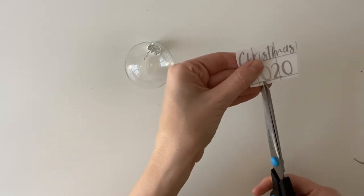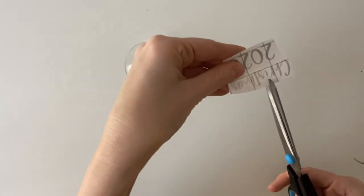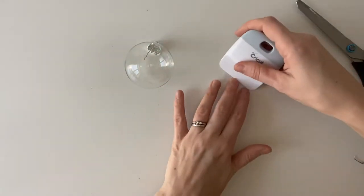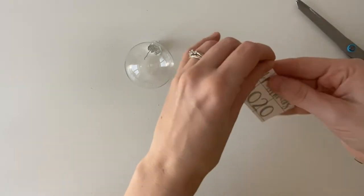Then I'm going to make some little slits into the transfer tape and backing paper, just being careful not to hit the letters. That just helps it bend.